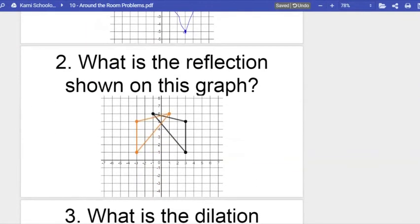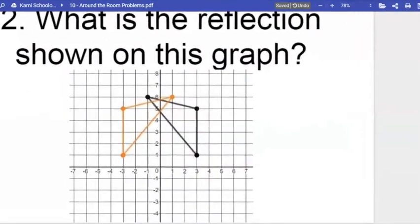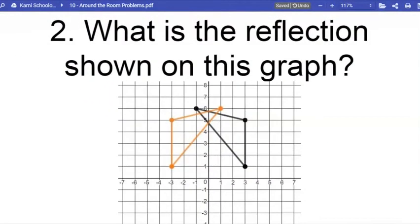All right. We're going to keep going until little Regan doesn't let me do this anymore. What is the reflection shown on this graph? So it looks like we already have the reflection drawn. We want to know what happened.